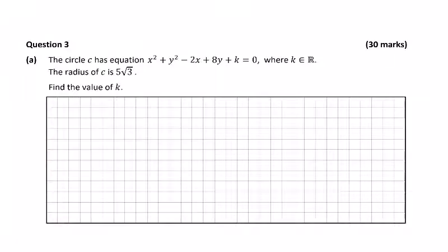Question 3a, we have the circle C with this equation, and we have a k in there. K is an element of real numbers, and the radius is 5 root 3. Find the value of k.